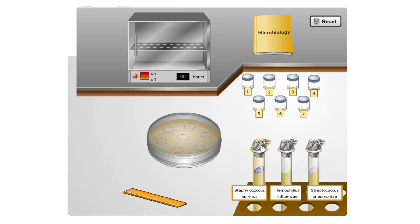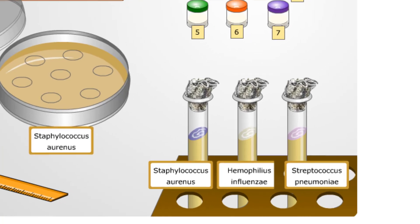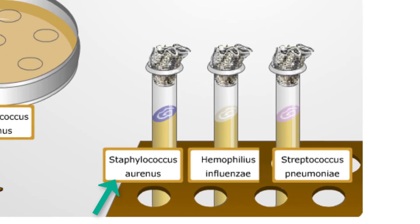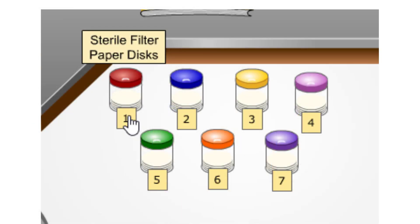Let's look at our procedure. First, we will inoculate the agar in the petri dishes by clicking one of the test tubes containing pathogenic bacteria. We have the choice of Staphylococcus aureus, Haemophilus influenzae, or Streptococcus pneumoniae.